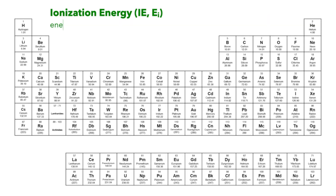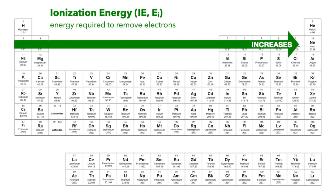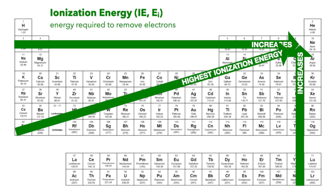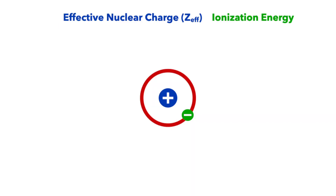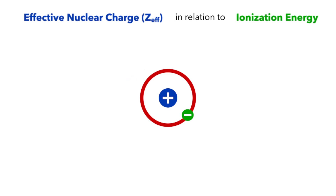Ionization energy is the energy required to remove an electron from an atom. In other words, it's the energy that must be applied to the atom in order to get the nucleus to part with one of its electrons. Like effective nuclear charge, ionization energy increases going right in a period and increases going up in a group, which again simply means that the atoms closest to the top right corner of the periodic table will have the highest ionization energy, meaning they'll require the most energy to remove their electrons. An atom with a high effective nuclear charge also has a high ionization energy, which means it won't easily part with an electron, so energy must be applied to get it to release the electron.